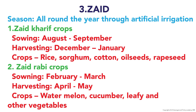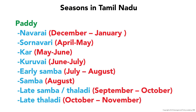Watermelon, cucumber, and leafy and other vegetables are grown in the Zaid season. Regarding seasons in Tamil Nadu for paddy, the seasons are: Navarai (December–January), Sornavari (April–May), Car (May–June), Kuruvai (June–July/August), Samba (August), Late Samba, Thaladi (September–October), and Late Thaladi (October–November).